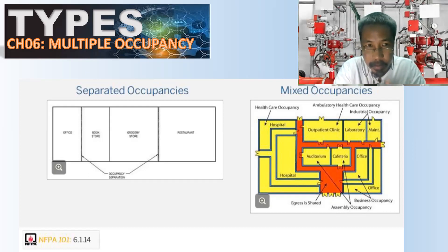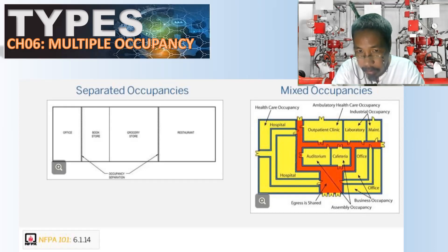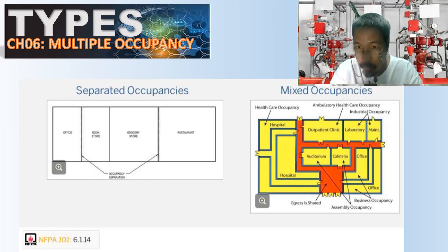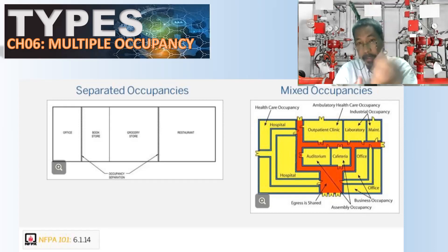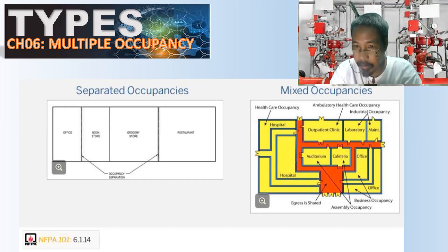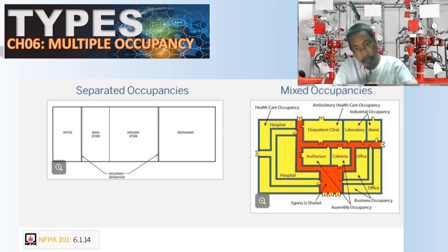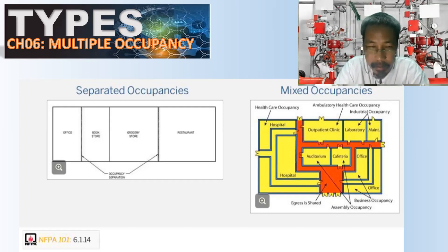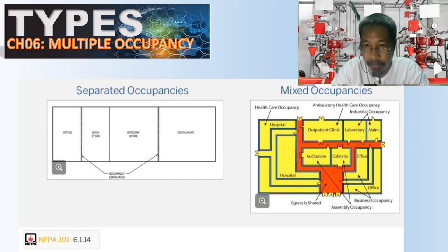That is the difference between mixed occupancy and separated occupancy. The red color on the layout indicates egress, which is a common area. Auditorium and cafeteria — if they accommodate 50 or more persons — are classified as assembly. So it doesn't matter even if the building or facility is a hospital; it could have industrial, assembly, business, ambulatory, and healthcare types of occupancy.